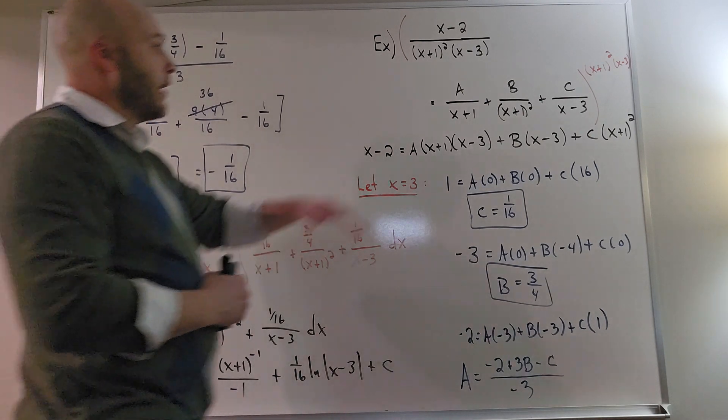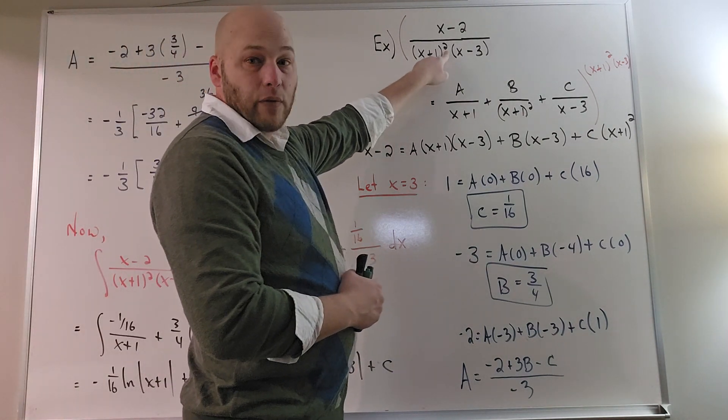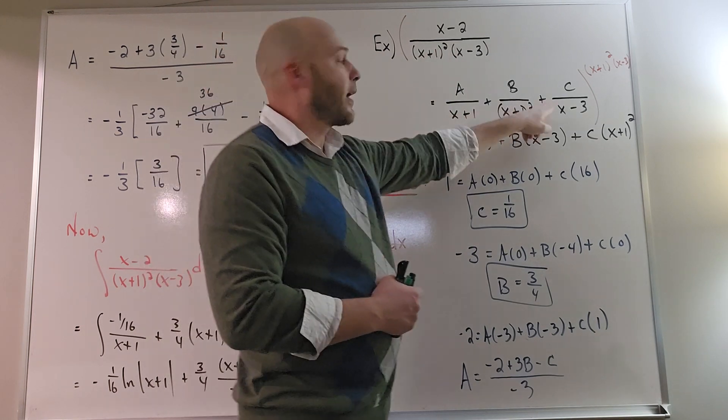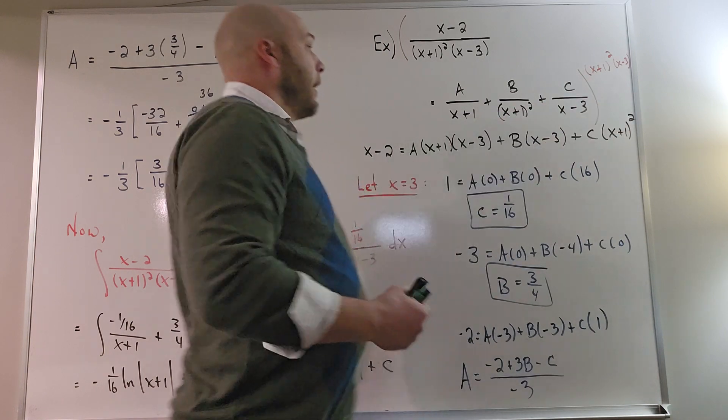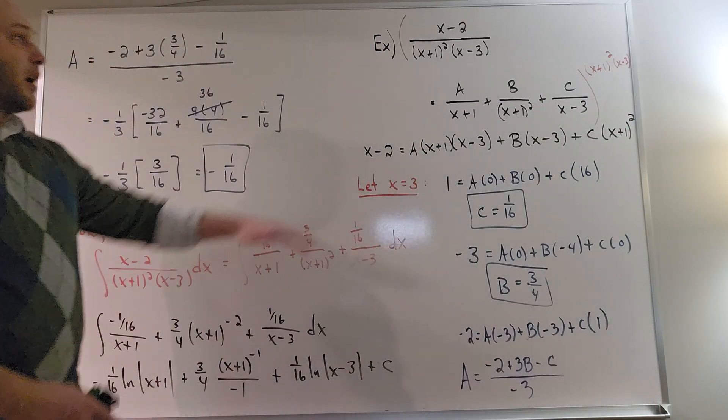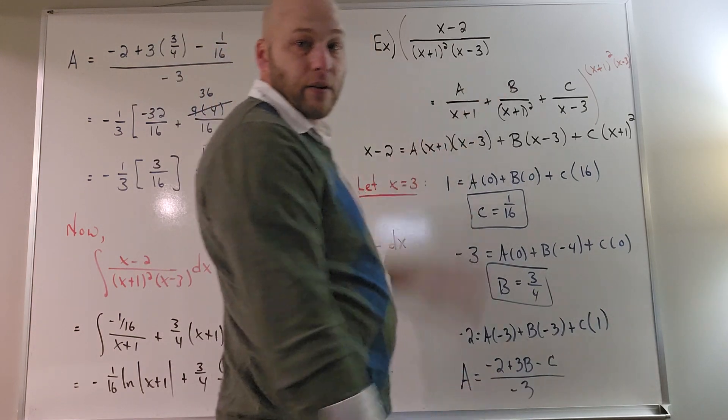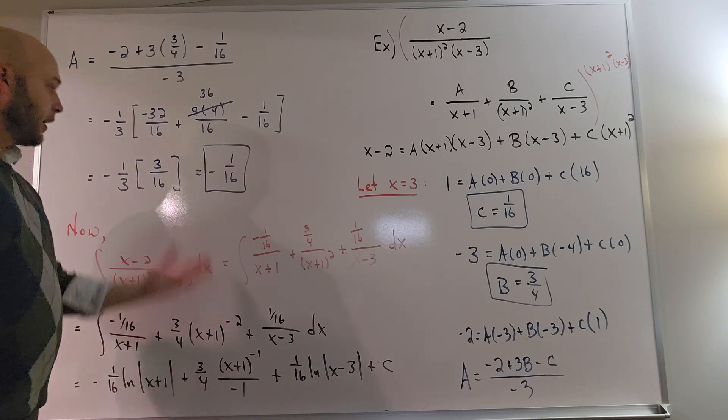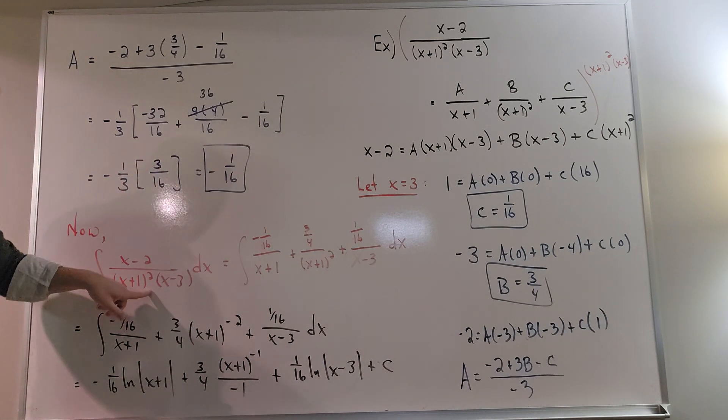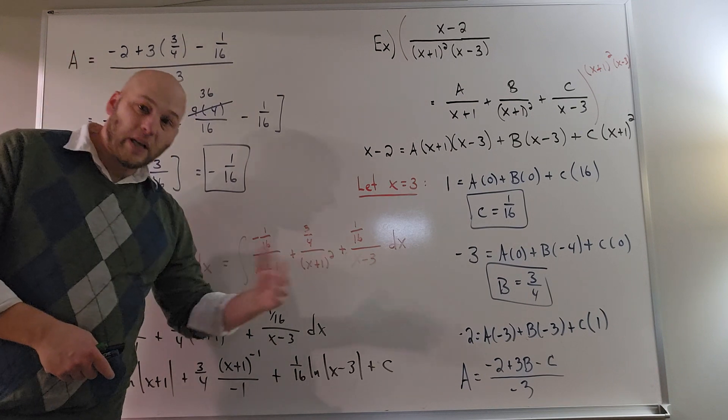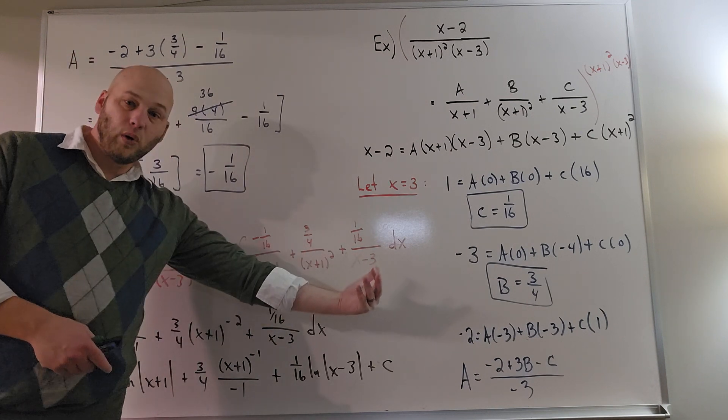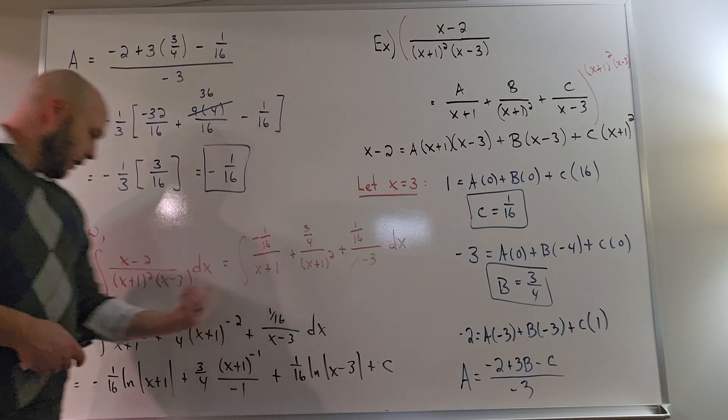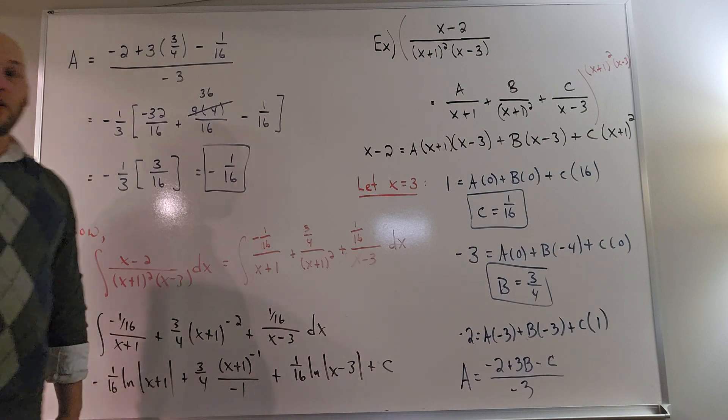And the same process would apply if this was a higher power. If this was x plus 1 to the third, then I would have an x plus 1, an x plus 1 squared, an x plus 1 cubed, and then an x minus 3. And, of course, you can adapt that to any other powers you have or any other factors that you have there. And then you go ahead and solve for the coefficients the same way we did here. And then you can replace that more complicated integrand with simpler terms, integrate using the power rule for anti-derivatives or a natural log, depending on the power of the denominator here, and get your integrand.